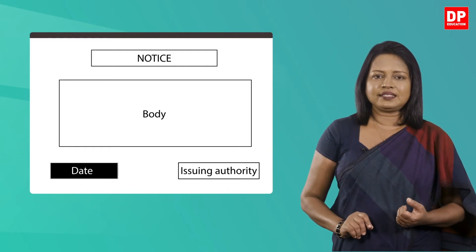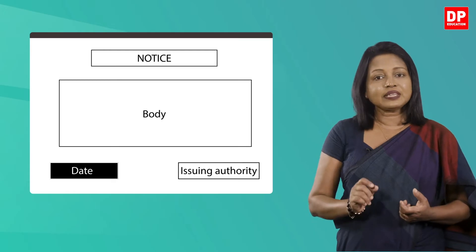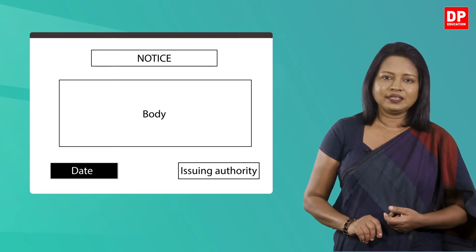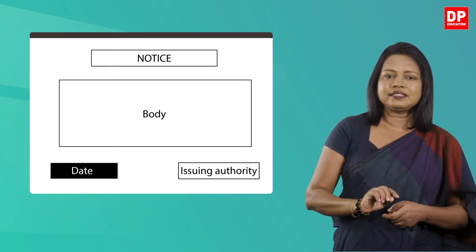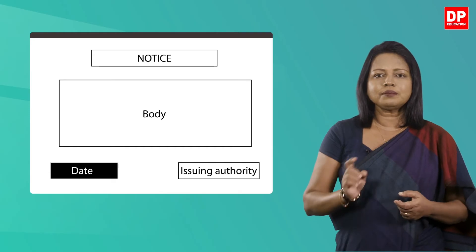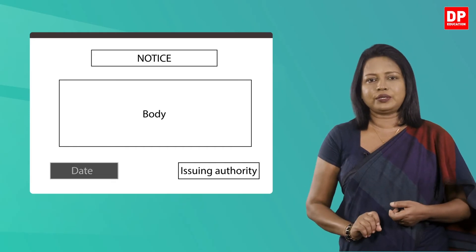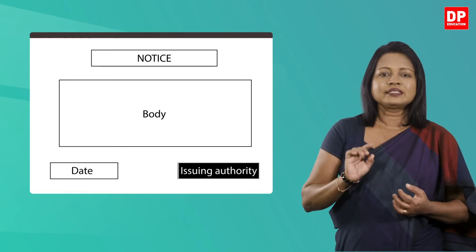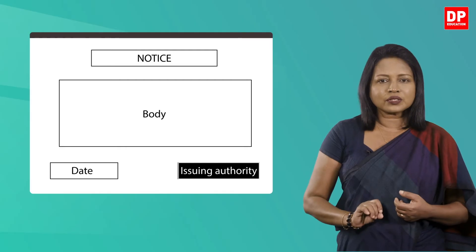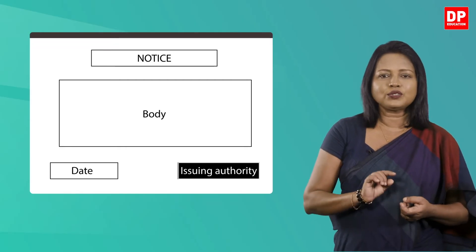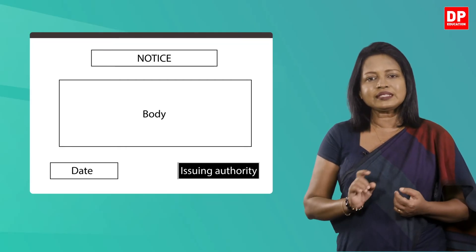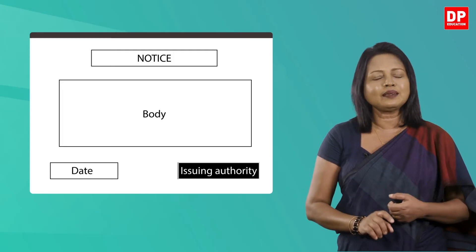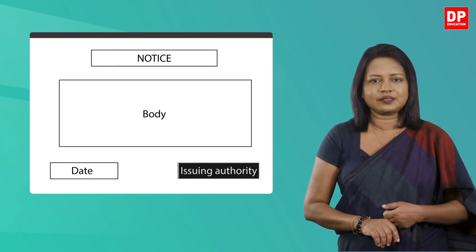Next there is the date, which is very important in a notice. As you can see, it's written in the bottom left-hand corner. In the right-hand corner, the issuing authority — that means the person or the organization issuing the notice — should give their name and address.